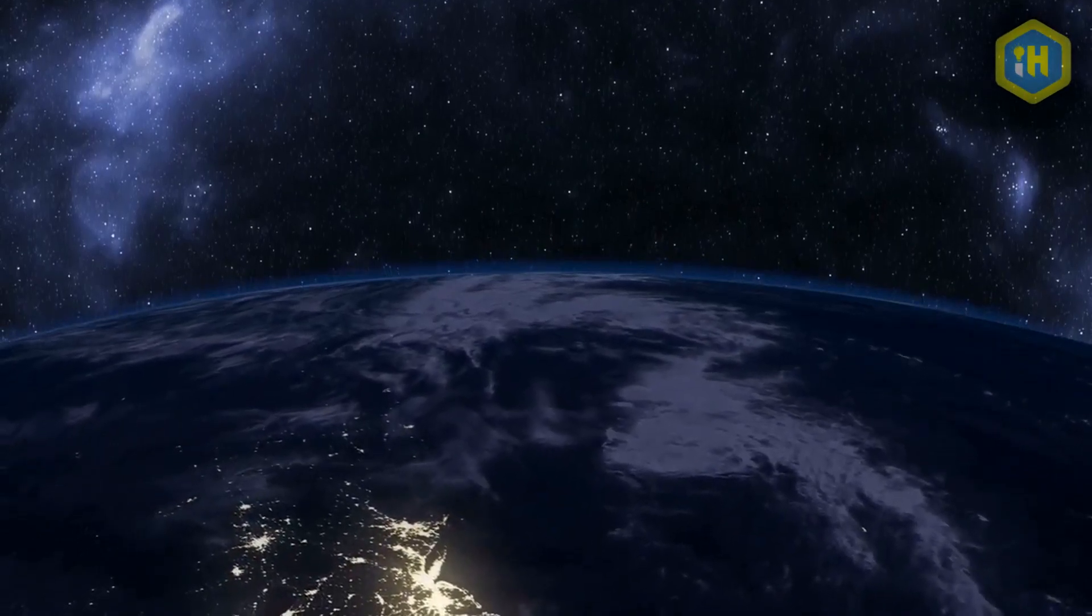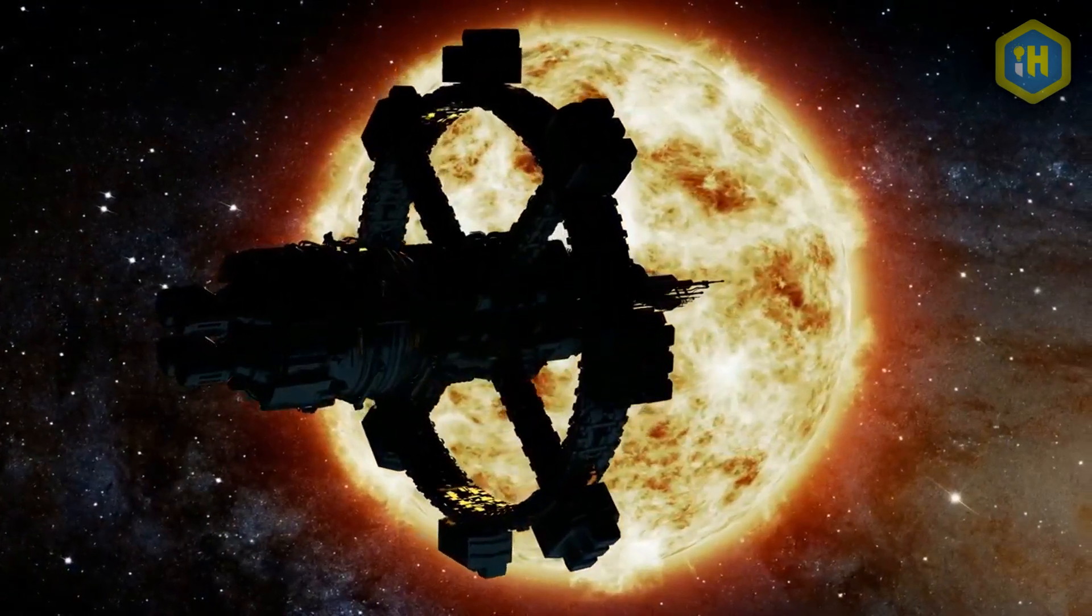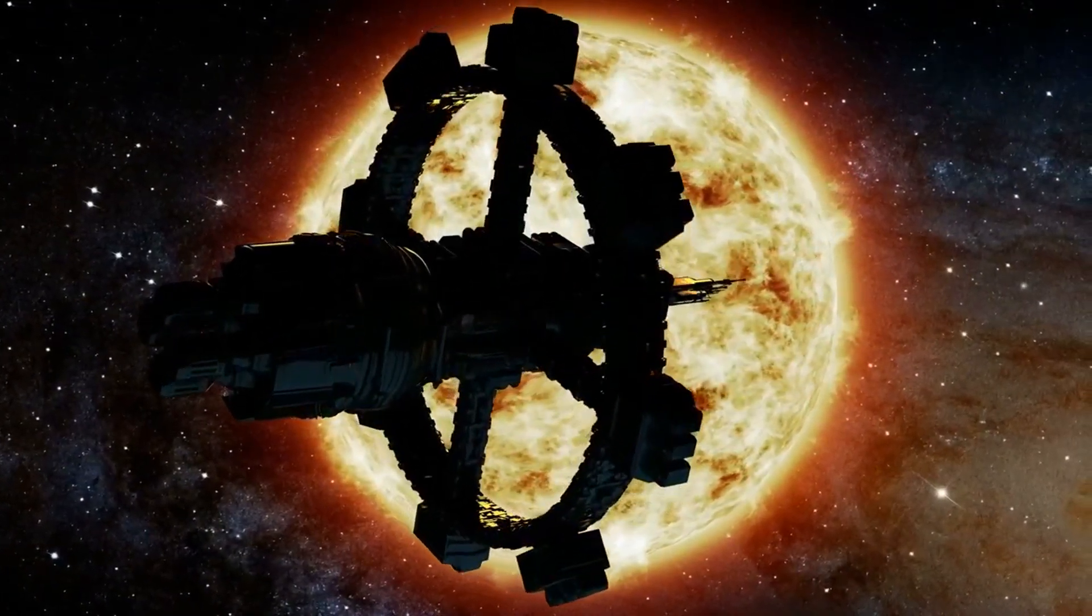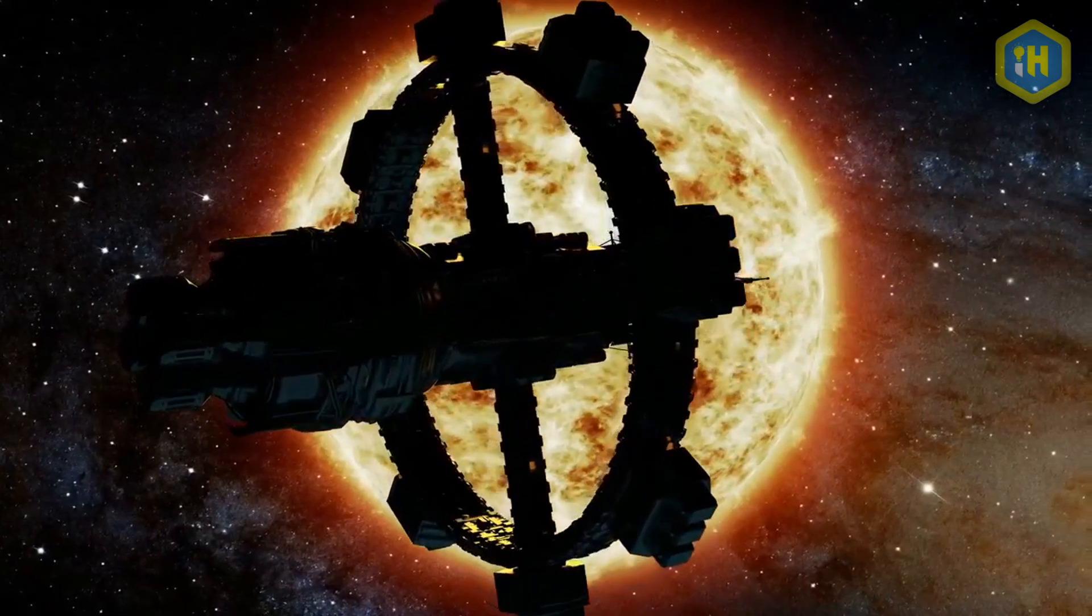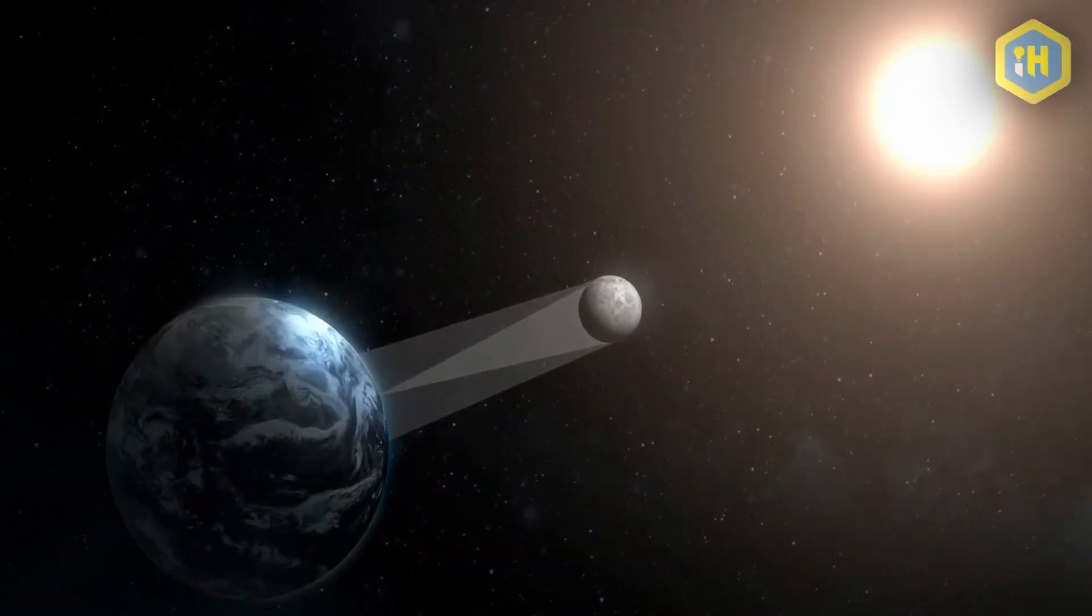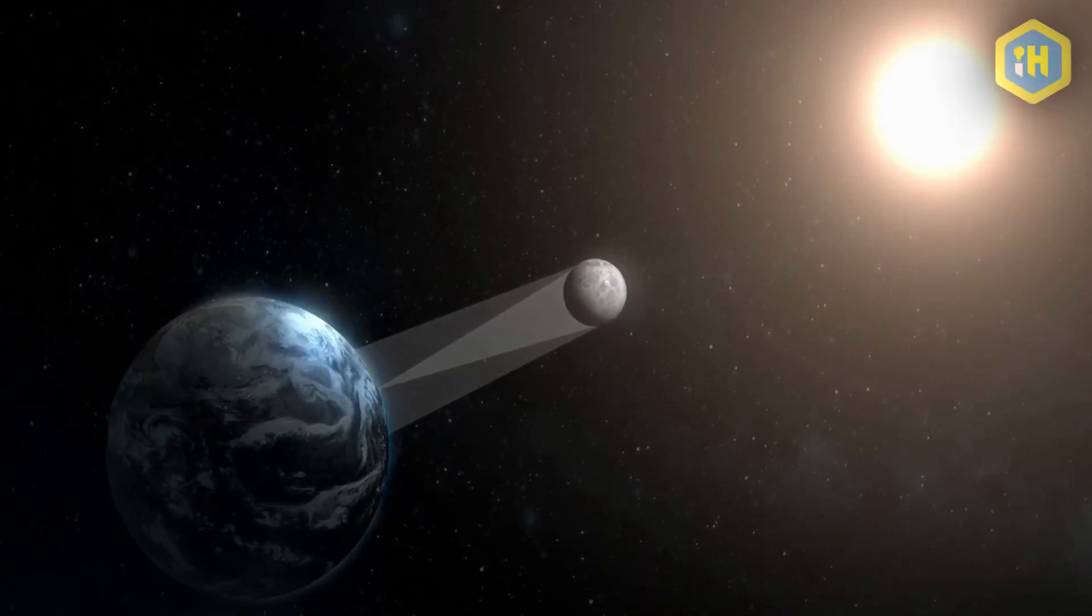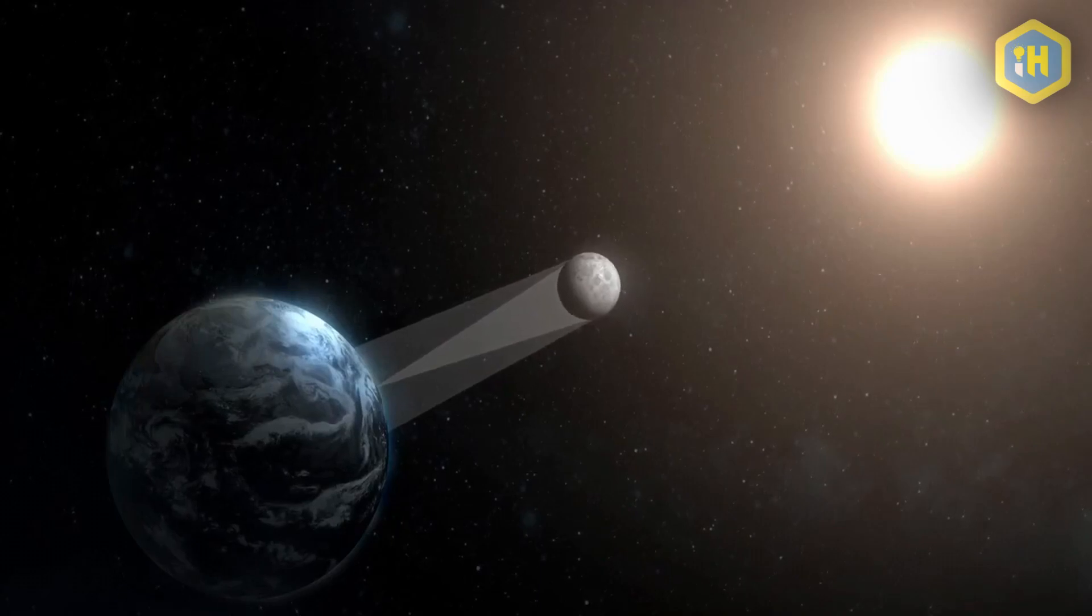The flat Earth model places our planet at the center of the universe but does not show the Sun orbiting the Earth. Instead, the Sun continuously circles around our sky like a lamp. There is no perpendicular momentum to help create orbit. It is not clear which force will keep the Sun and the Moon suspended above Earth instead of hitting the Earth directly, Davis said.